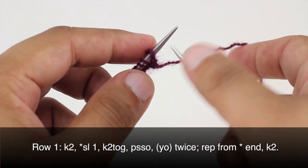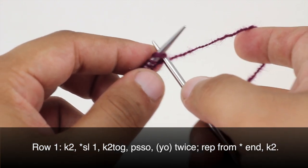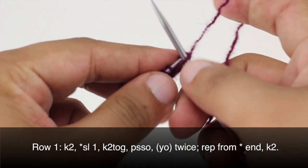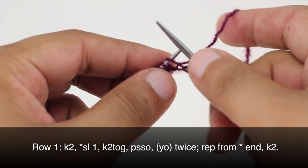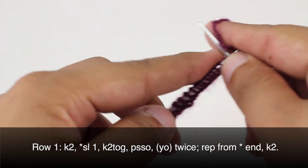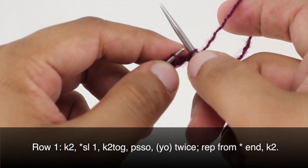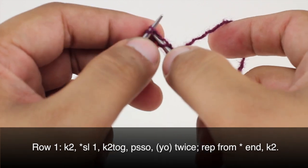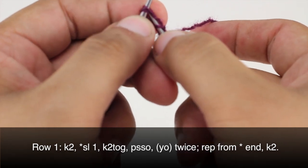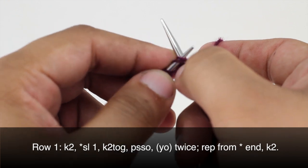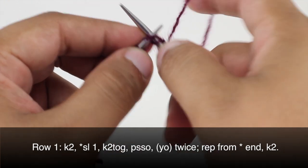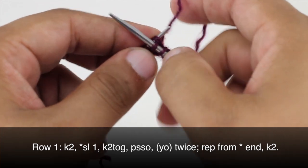Row 1. We are going to begin by knitting 2. Then we are going to slip the next stitch knitwise, then knit 2 together. This can be a little bit hard to do on the cast on row. There is our knit 2 together.